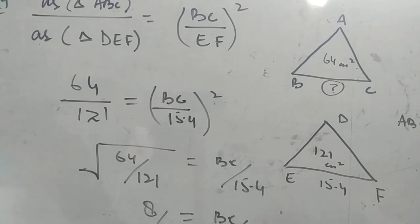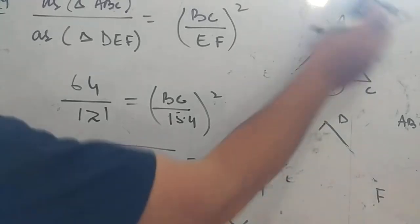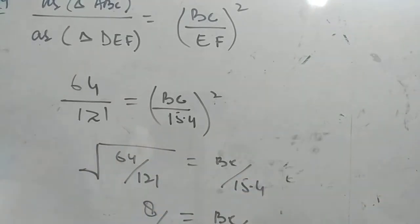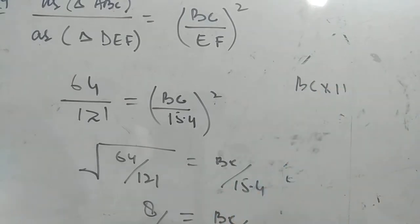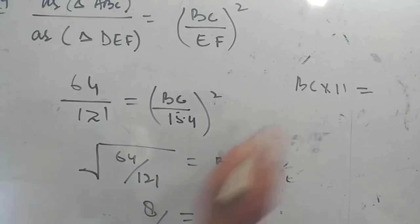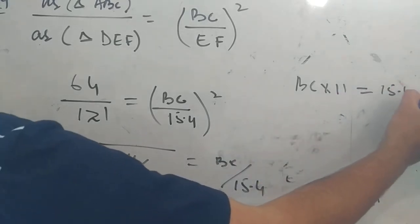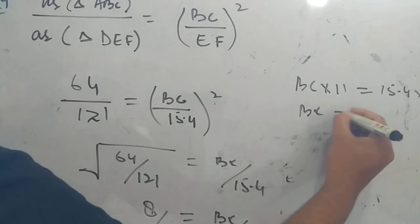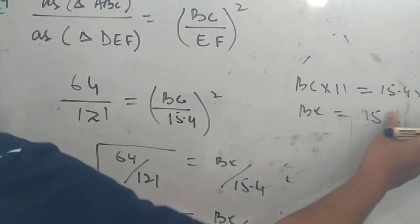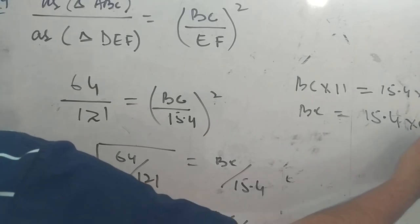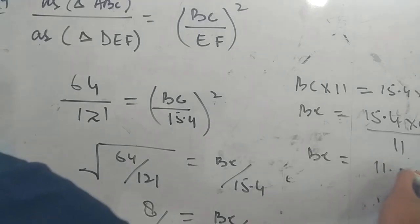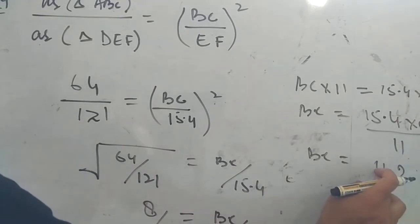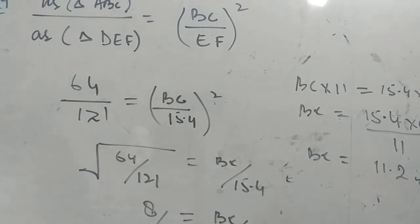Now by cross multiplying we get: BC into 11 is equal to 15.4 into 8. Therefore BC is equal to 15.4 into 8 divided by 11. After calculation we get BC is equal to 11.2 centimeters.